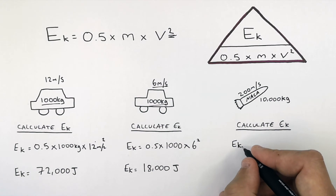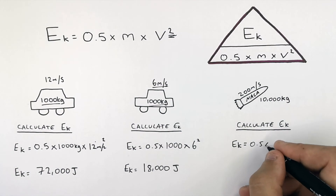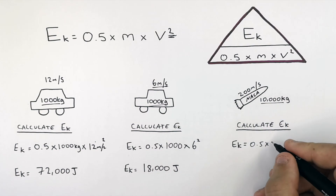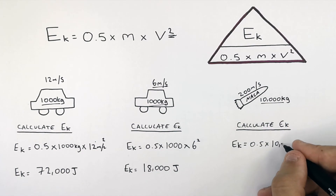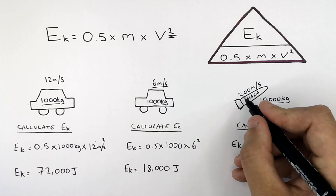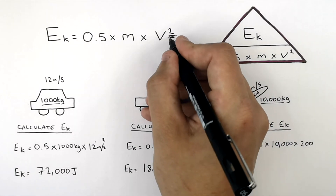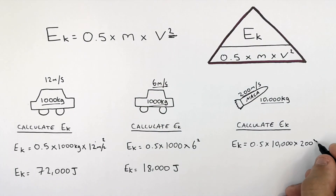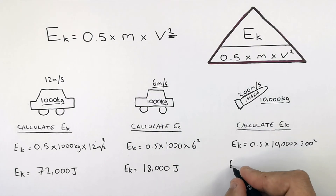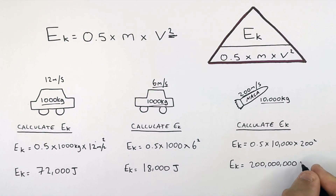For the last example, kinetic energy equals half mv squared. Substituting in the numbers: E equals 0.5 times 10,000 kilograms times 200 meters per second. We need to square the 200 meters, giving a kinetic energy stored in this rocket of 200 million joules.